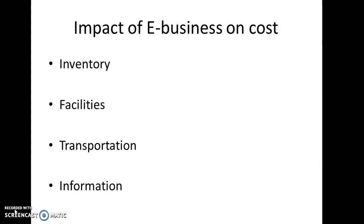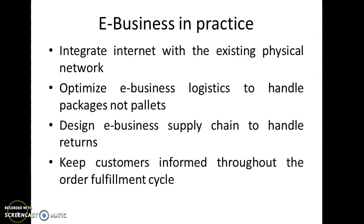The last cost area is information — providing information about products, order status, and the status of production is very easy when using e-business in supply chain management systems. E-business in practice: the first task is to integrate the internet with the existing physical network, using the internet based on the existing physical network.